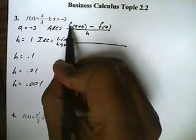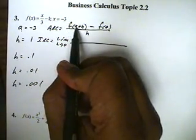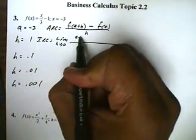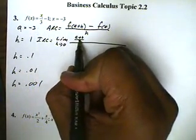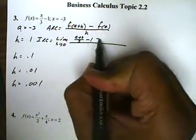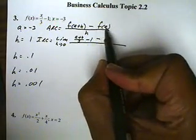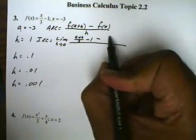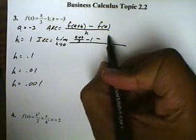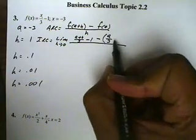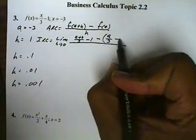For the function, we want to put in a plus h everywhere we see an x, so this will be (a plus h) all over 3 minus 1. Then minus the function f with x replaced by a, so this will be a over 3 minus 1, everything divided by h.